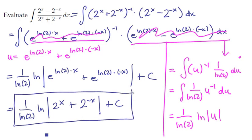So we get this formula right here: the antiderivative is 1 over ln of 2 times the natural logarithm of 2 to the x plus 2 to the negative x, all times a constant. Whew, that was a mess.